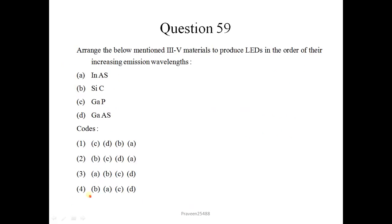Next question is question 59. Arrange the below mentioned 3-5 materials to produce LEDs in the order of their increasing emission wavelength. Here approximate wavelength in nanometer is given. Their correct sequence is increasing emission wavelength is ABCD. Correct option is 3.